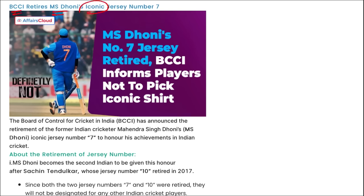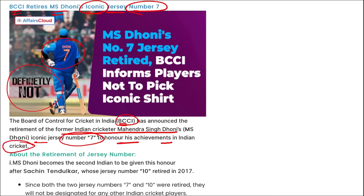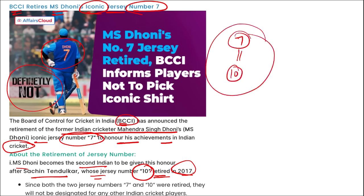BCCI has announced the retirement of MS Dhoni's iconic jersey number 7 to honor his achievements in Indian cricket. Dhoni becomes the second Indian to receive this honor after Sachin Tendulkar, whose jersey number 10 was retired in 2017. No future Indian cricketer can use jersey numbers 7 or 10. MS Dhoni was awarded Padma Shri in 2009, Padma Bhushan in 2018, and the Major Dhyan Chand Khel Ratna Award in 2007.